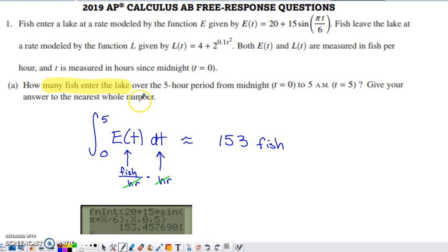Part A asks us how many fish enter the lake over the five-hour period from midnight to 5 a.m. Give your answer to the nearest whole number. Since this is the rate at which fish are entering the lake, the total number of fish that enter from time zero to time five is going to be determined by integrating that rate of change across the interval from zero to five.